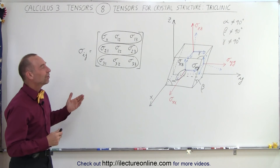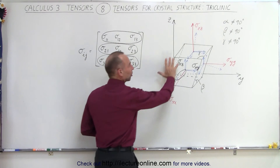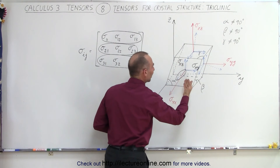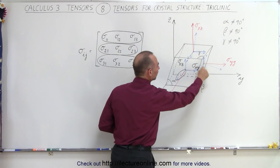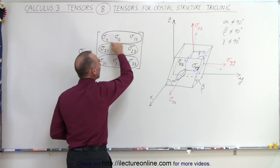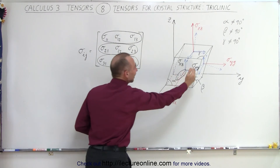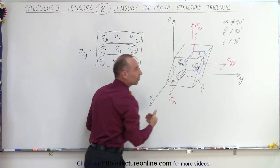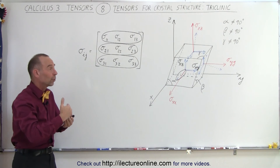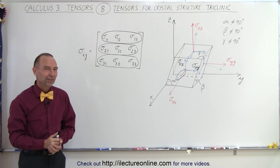The best way to represent this structure via tensor is to say that we can represent any perpendicular vector of any one of the three surfaces by the combination of three vectors in the x, y, and z direction — in terms of the three vectors that are parallel to the x, y, and z directions. That's how it's done using tensors.